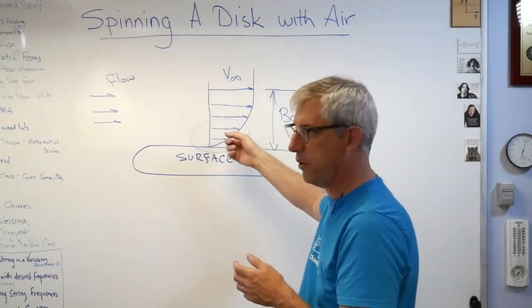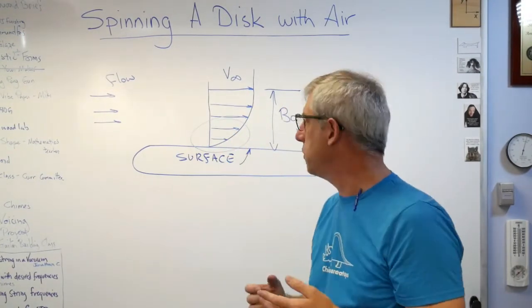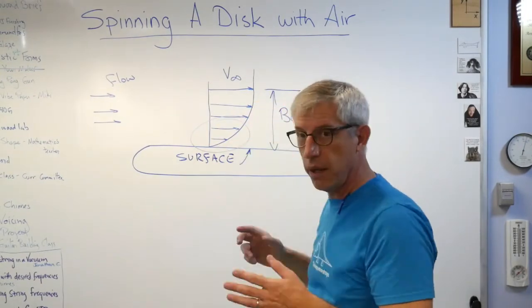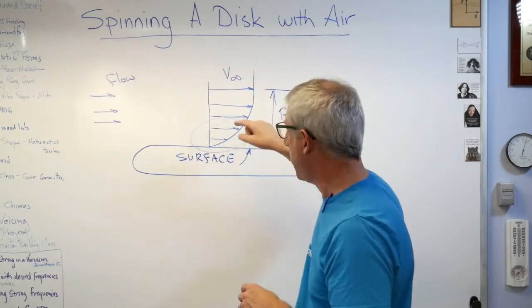Without viscosity you don't, so like superfluid helium wouldn't do this. Well I'm not going to be flying through superfluid helium anytime soon. Since I have to fly through air and air has viscosity, not a lot but some, this is what the boundary layer looks like.